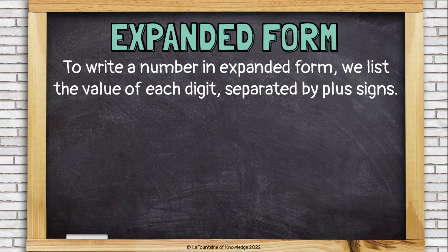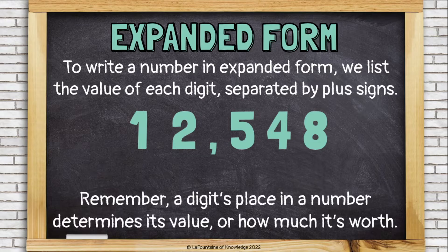To write a number in expanded form, we list the value of each digit, separated by plus signs. Remember, a digit's place in a number determines its value, or how much it's worth. So in this number, 12,548, the 8 is worth 8, because it's in the 1's place.